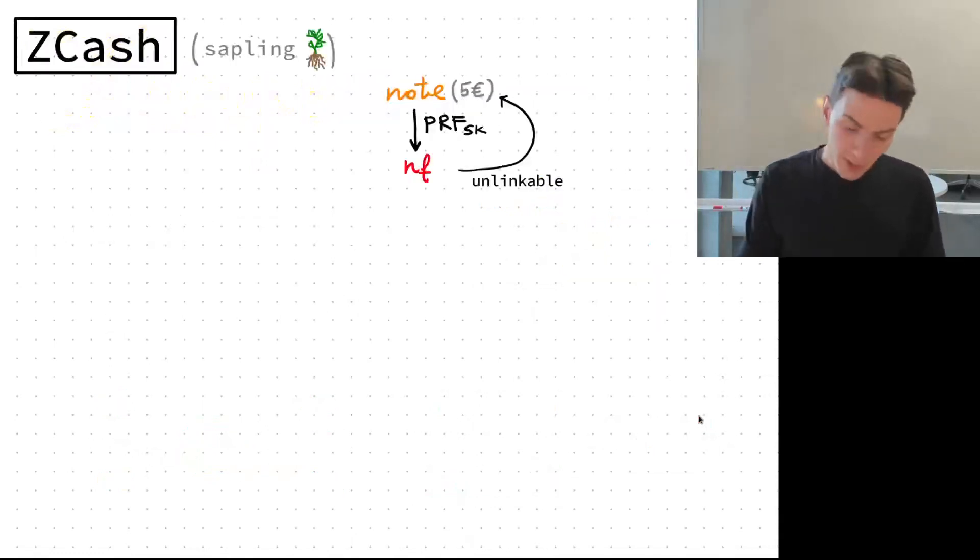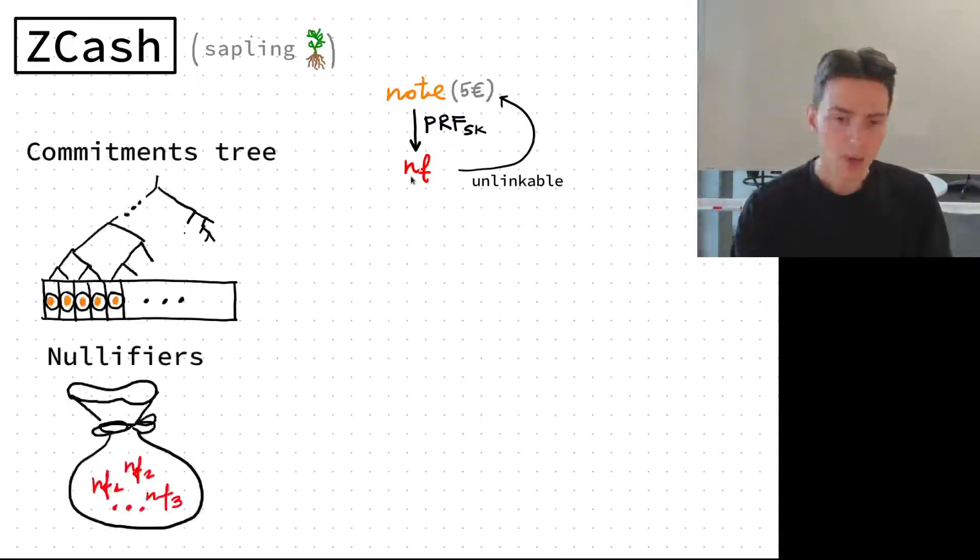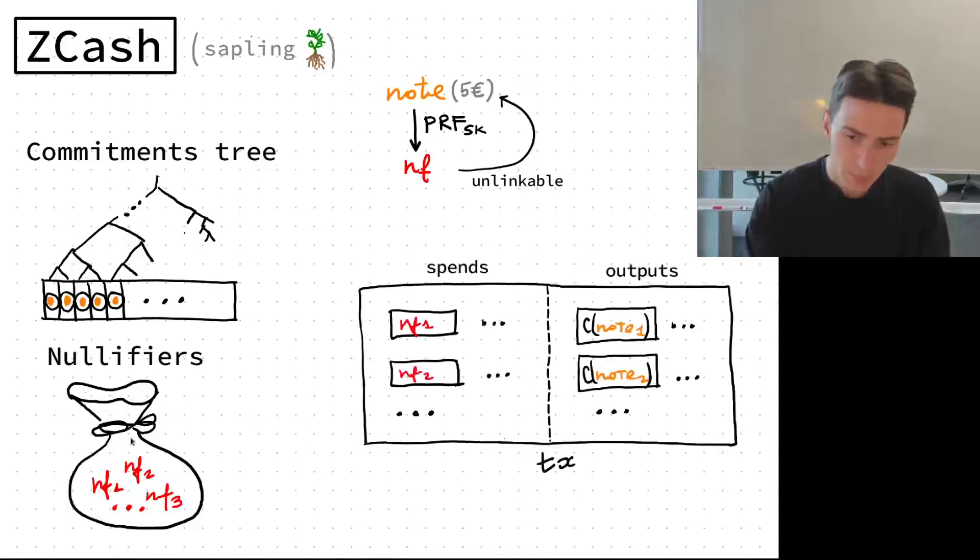So how do we do that? Let's start from something very simple, we'll start from Zcash Sapling. In Zcash we have these two main building blocks called notes and nullifiers. Notes are these things containing values, and from a note if you own it you have a secret key, you can derive using PRF a nullifier, and these two things are linkable. If you see a nullifier of someone's note you cannot know what note contains.